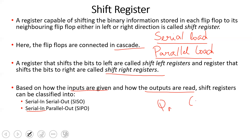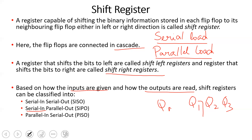There are four major classifications of shift registers. Serial in serial out: data is input and output one bit at a time. Serial in parallel out: data is input serially but all flip-flop outputs Q1, Q2, Q3 are read simultaneously as parallel out.